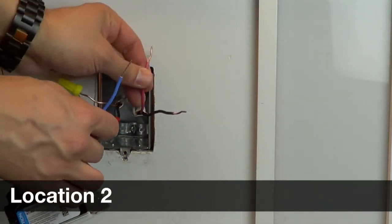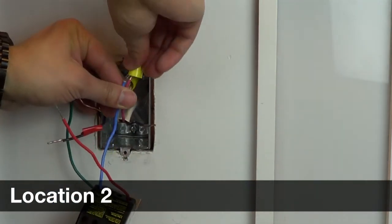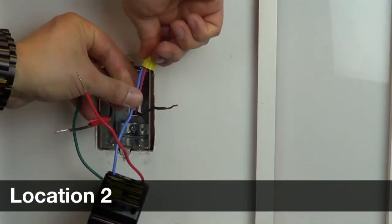Identify the wire that you connected to the blue wire in the first location. This will not be the tagged wire. Connect this wire to the blue wire on the companion dimmer. Remember that we used the red wire for this.